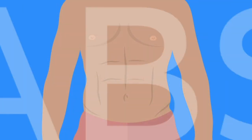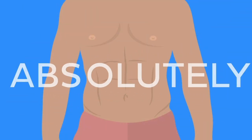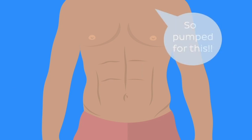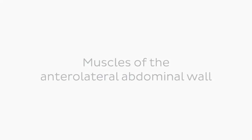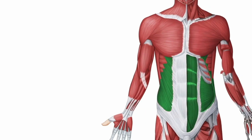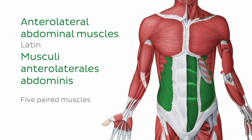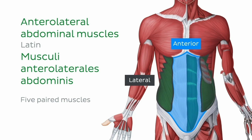Are you feeling absolutely ready to master these abdominal wall muscles? Fantastic! Let's begin with the muscles of the anterolateral abdominal wall. There are five bilaterally paired muscles of the anterolateral abdominal wall, and as the name suggests, these muscles are located on the anterior and lateral surfaces of the abdominal cavity.